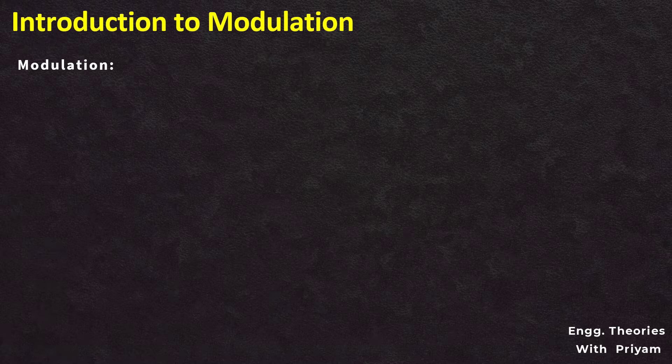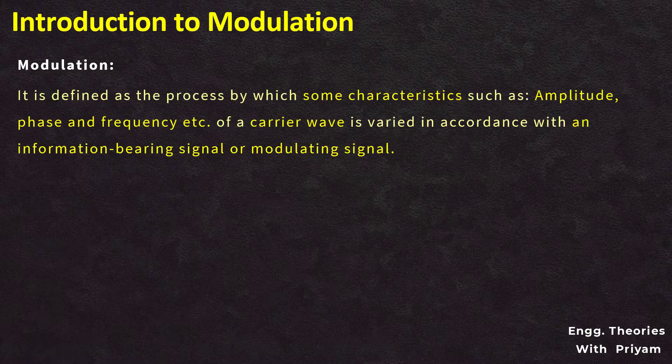Modulation in the communication system is done for the same purpose — to transfer the signal safely from sender to receiver. Modulation allows us to send a signal having low frequencies over a bandpass frequency range so that the signal gets less affected by noise or distortion during transmission. Modulation is defined as the process by which some characteristics such as amplitude, phase, and frequency of a carrier signal are varied in accordance with an information-varying or modulating signal.